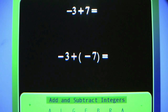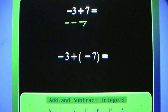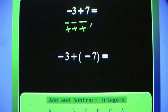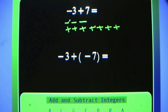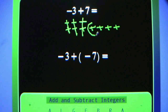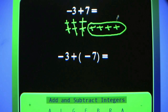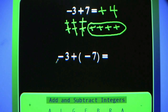Here we go. Negative 3 plus 7. Each one of those minus signs or negative symbols represents negative 1. Each one of those positive signs represents positive 1. Three of them for negative 3, seven of them for positive 7, and one of each cancels out and equals 0. What's left? Positive 4. One of each cancels out. Negative 3 plus 7 equals positive 4.